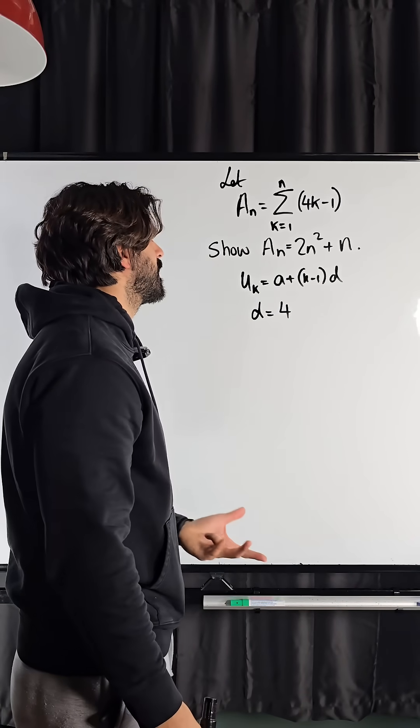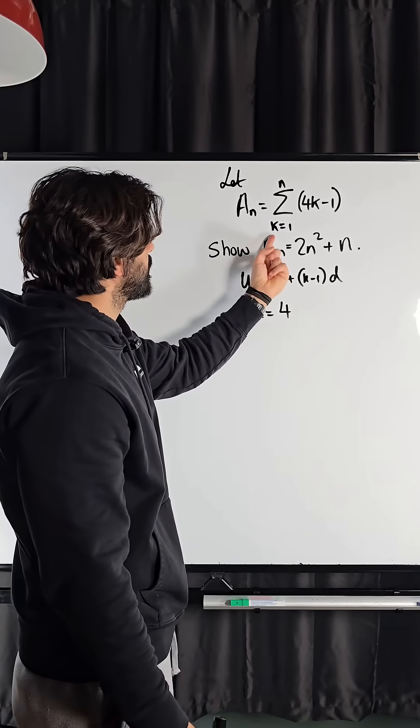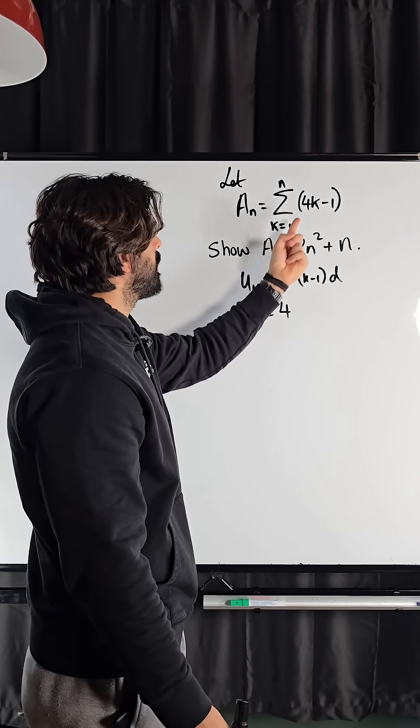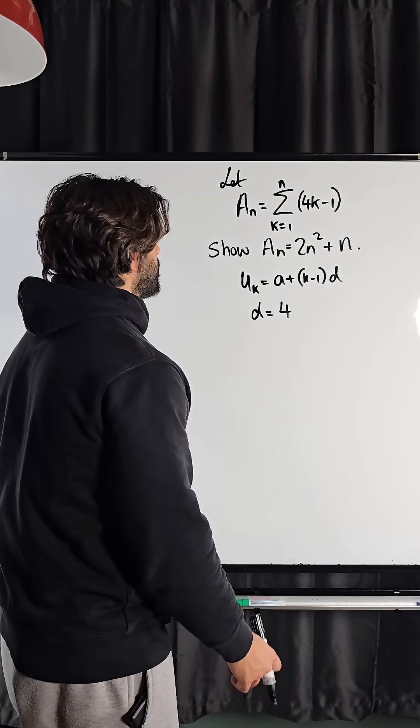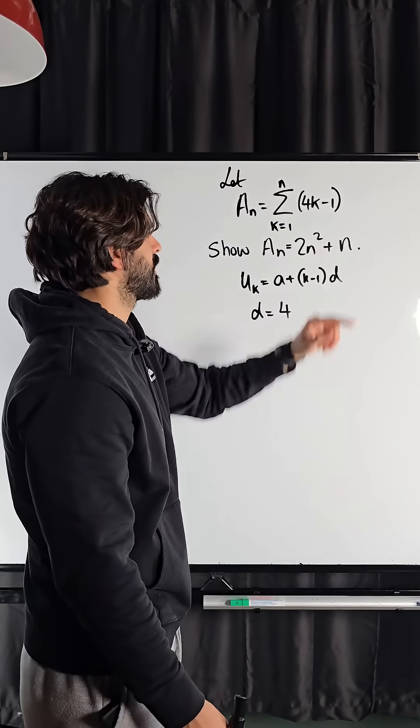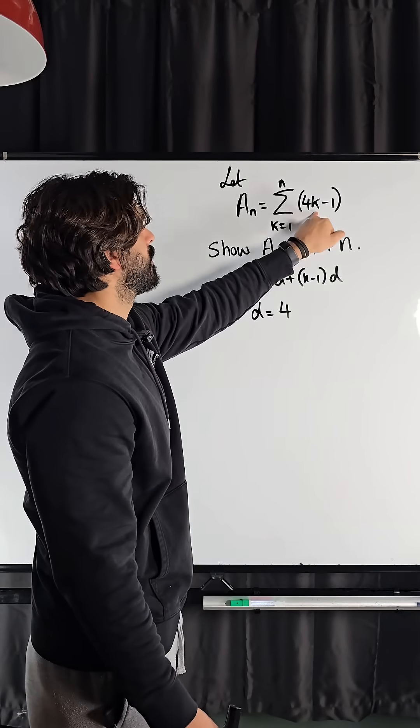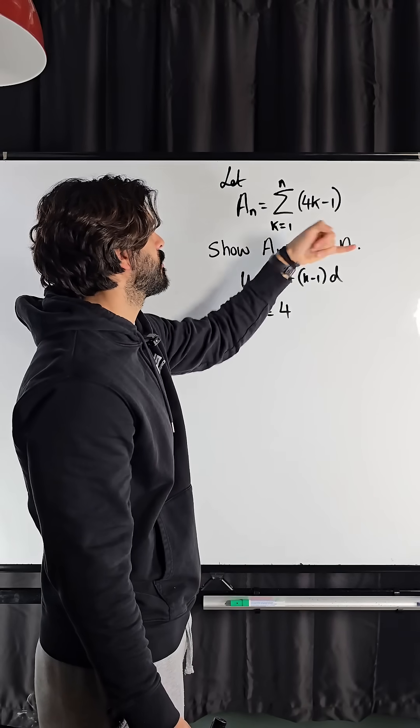But what about a, the first term? Well, you find the first term by substituting in 1 into our general sequence. Okay, essentially this equals 4k minus 1. Now, what do we get when we sub in 1? We'll get 4 times 1 minus 1, which is 3.